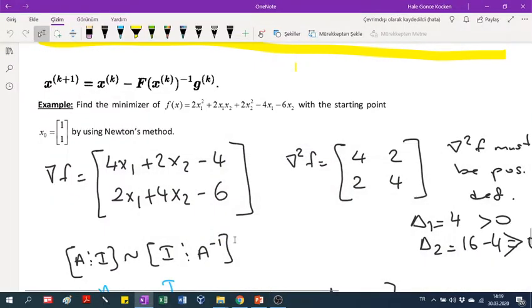Okay guys, I will solve the last question again. We didn't complete it, I will repeat it for you. We will try to find a minimizer of this function with starting point (1,1) by using Newton's method.